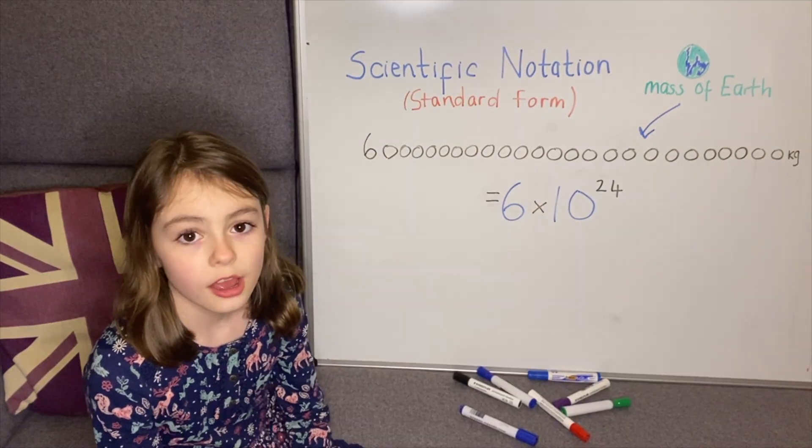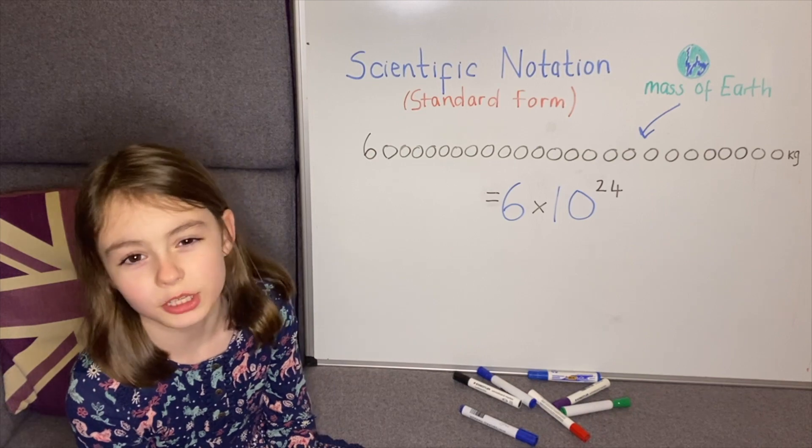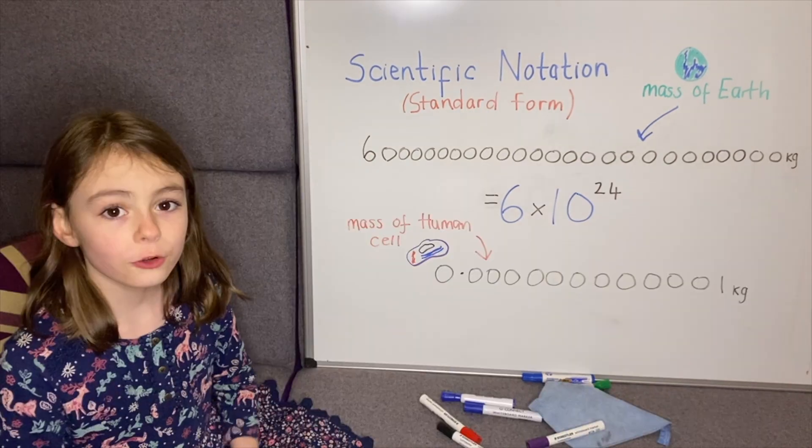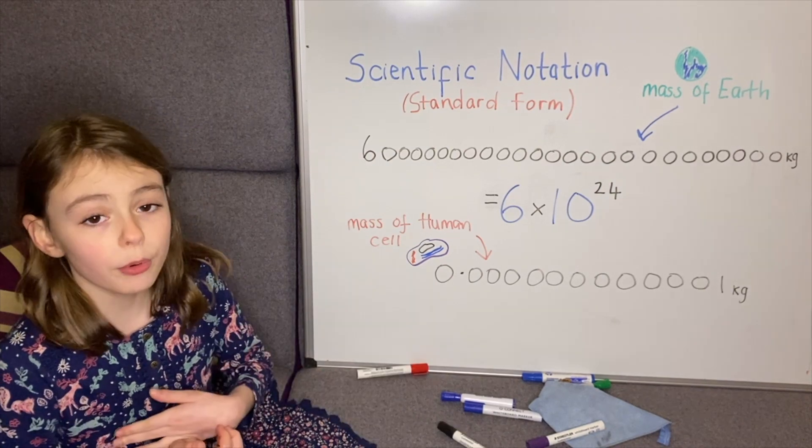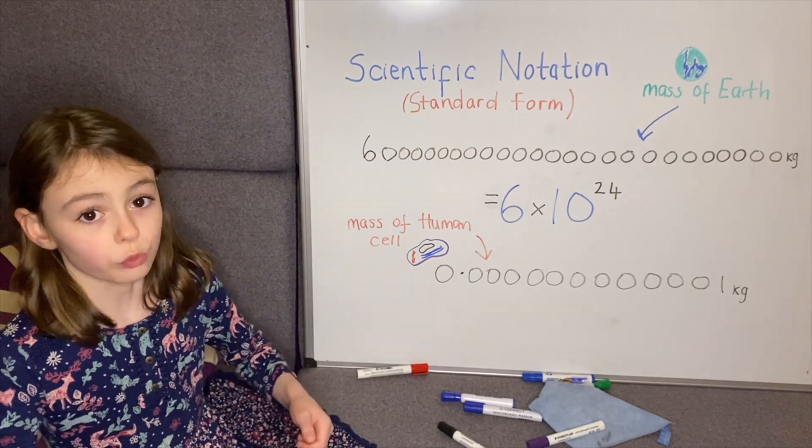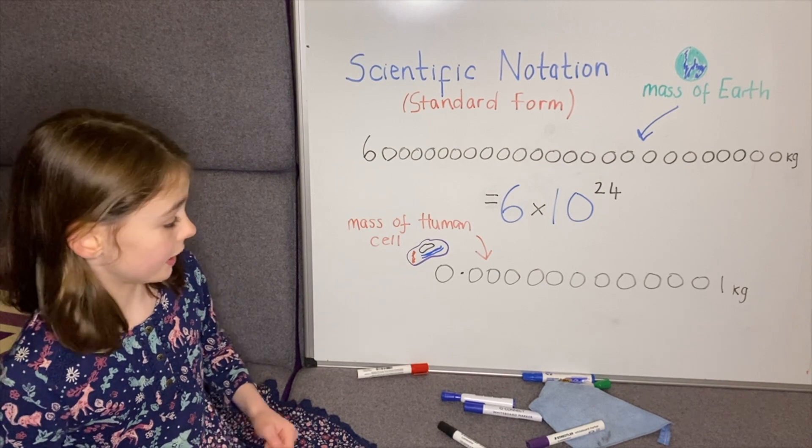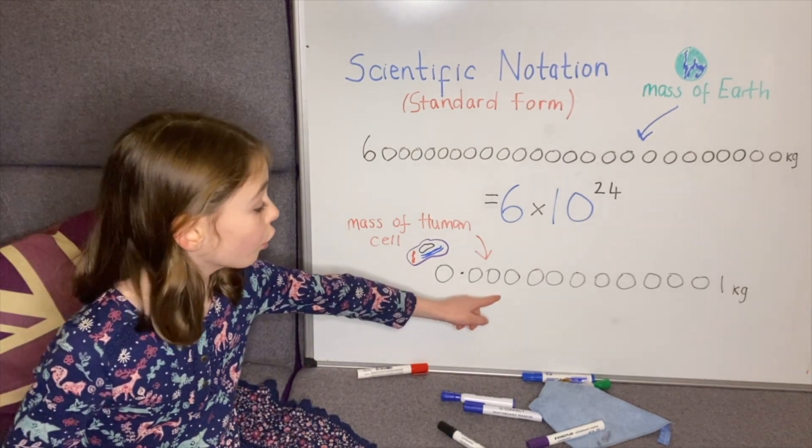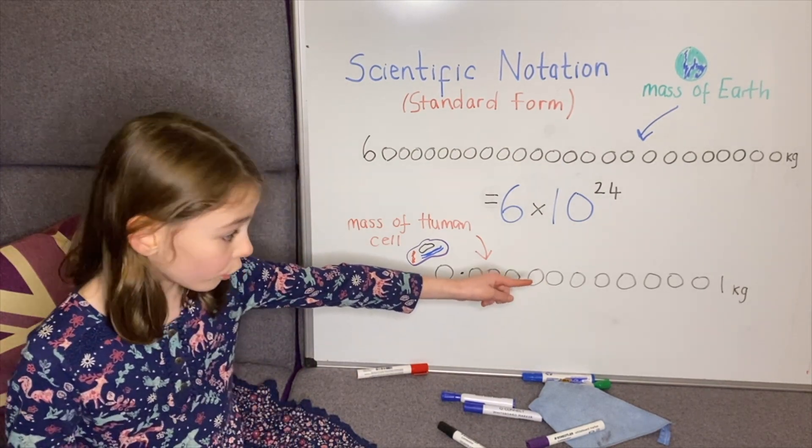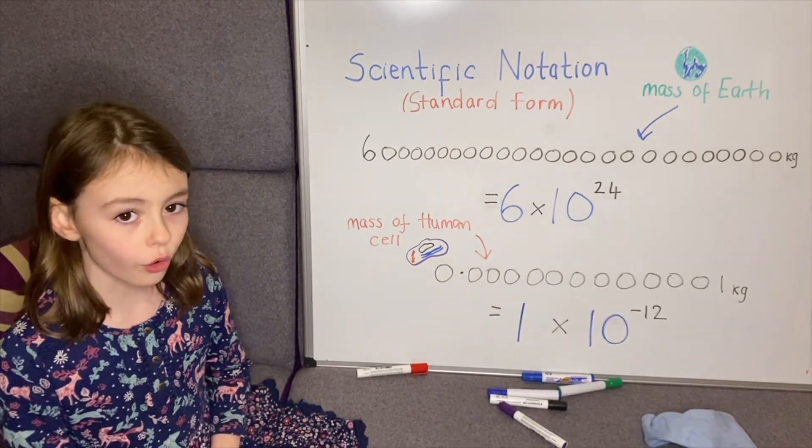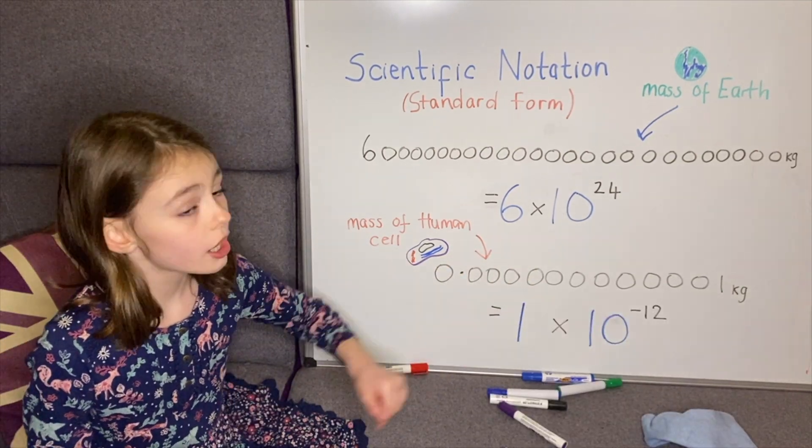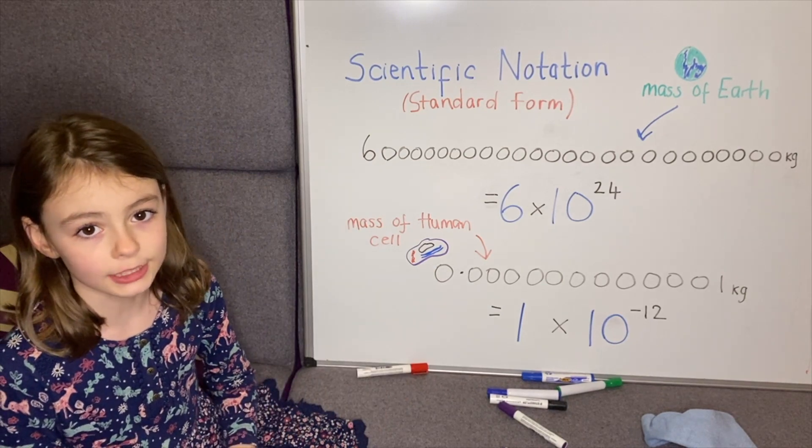As I said earlier, scientific notation can also be used to represent really small numbers. For example, our body is made up of trillions of cells, but the average mass of just one cell is approximately 0.000001 kilograms, or 1 times 10 to the minus 12 in standard form.